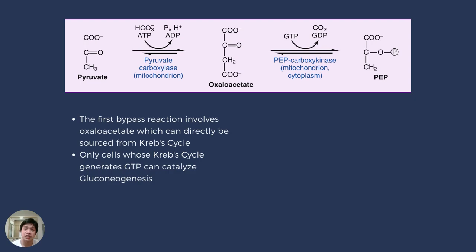What's special here is that to produce phosphoenolpyruvate from oxaloacetate, we need guanosine triphosphate. There are only two cell types in the body able to produce GTP through the Krebs cycle — liver cells and kidney cells. That's why only the liver and kidney can catalyze gluconeogenesis: they are the only two cells able to produce GTP.